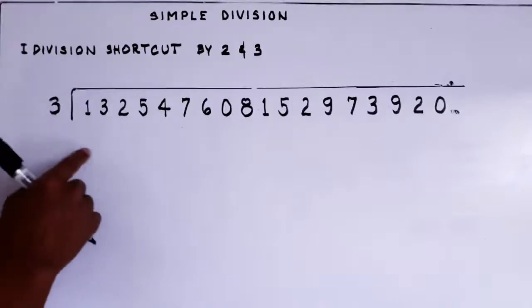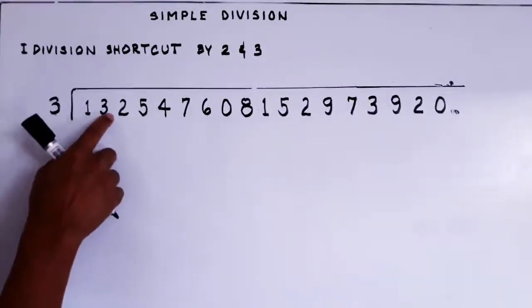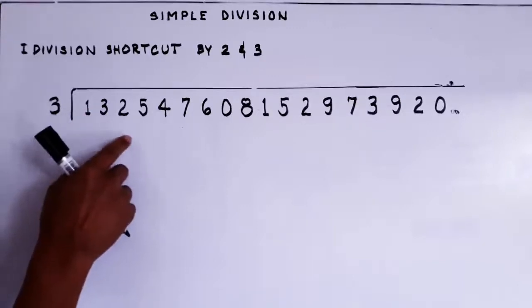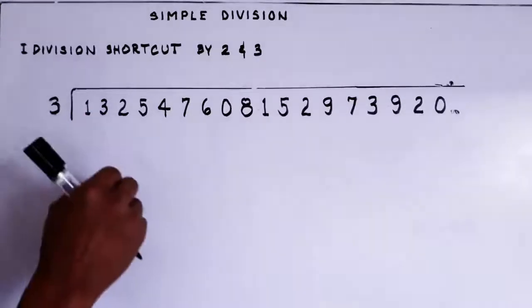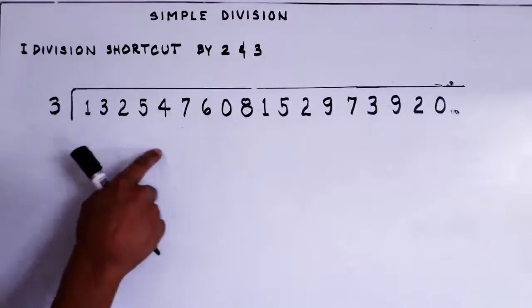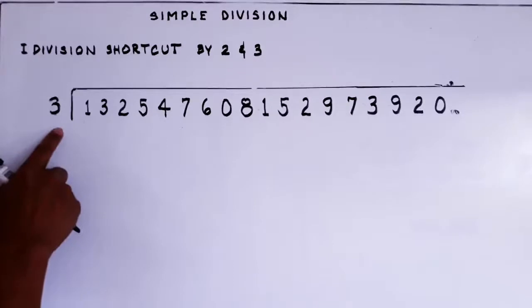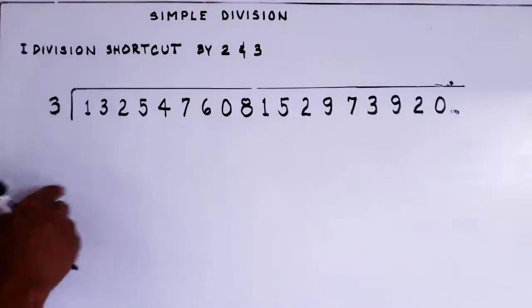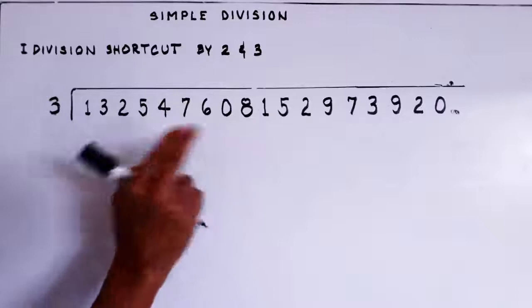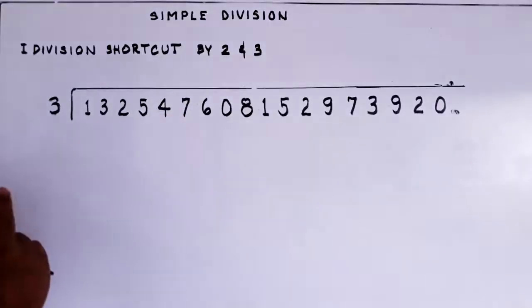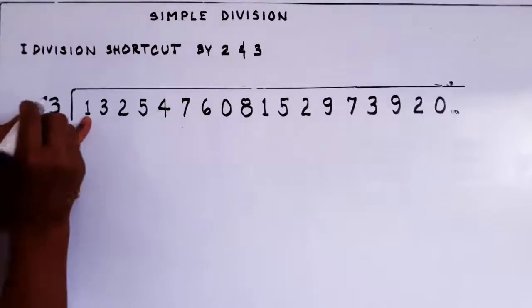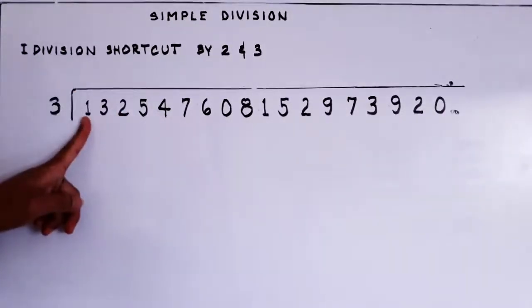When dividing by 3, the remainder can only be zero, one, or two — we will put either 1 or 2 next to the next digit, or nothing if it is exact. The divisor is 3, so the largest two-digit number you can encounter is 29, not 30, because 30 gives 10 already. So the number we place beside each digit will be 0, 1, or 2. Let's start: 1 divided by 3 is zero, so we put zero — actually we skip the leading zero.